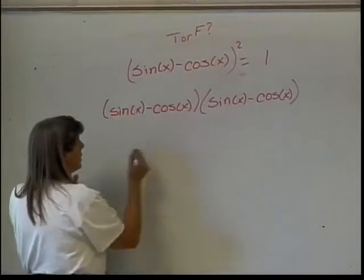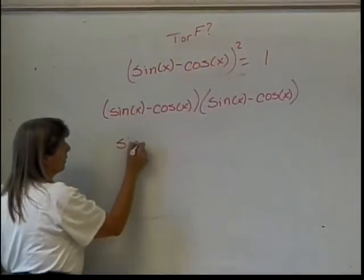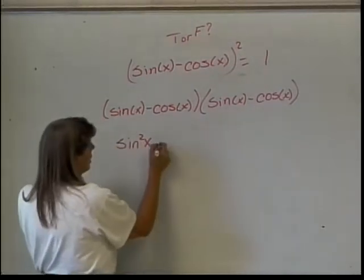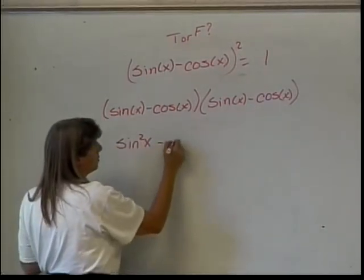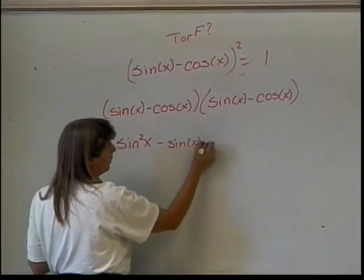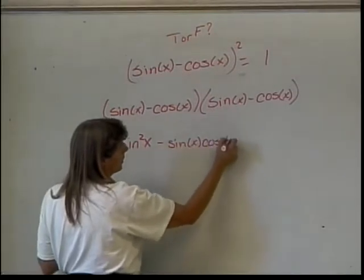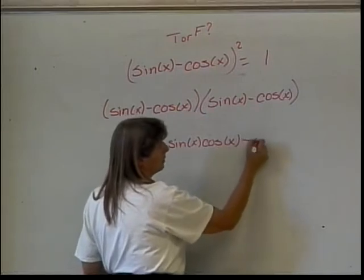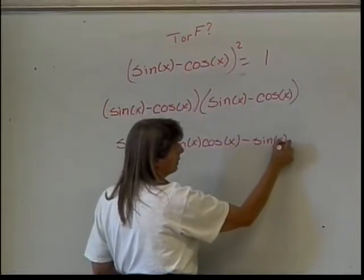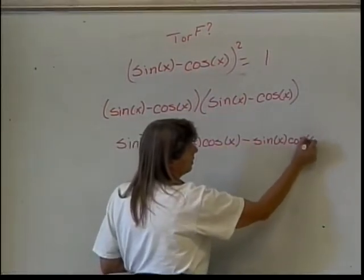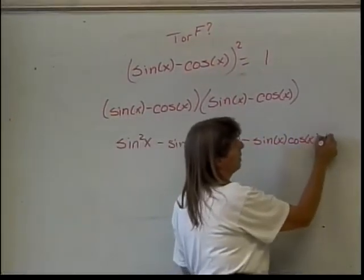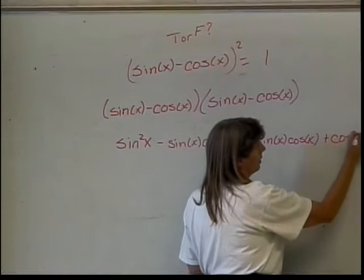Multiply sine times sine, that gives me sine squared of x. Multiply sine times the negative cosine, that gives me negative sine of x times the cosine of x. Multiply the negative cosine times the sine, that gives me negative sine of x times the cosine of x. And multiply the negative cosine times the negative cosine, that gives me plus cosine squared of x.